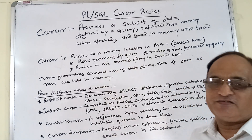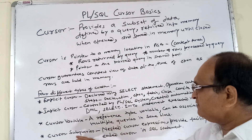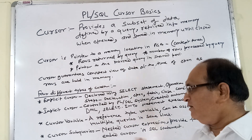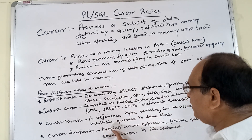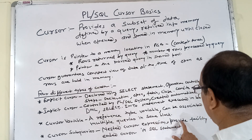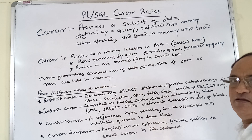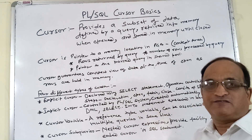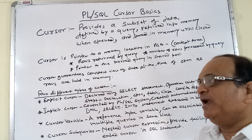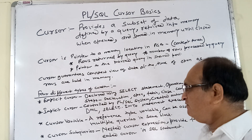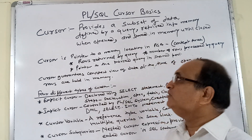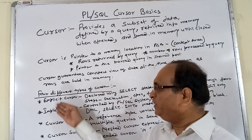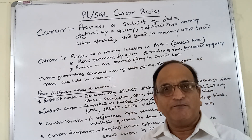The fourth type is the cursor subquery, which is used rarely and only in certain very specific situations. These are nested cursor expressions that provide the facility to embed a cursor in a SQL statement. It is essentially a facility to declare a cursor as a subquery within a main statement. That is all for now about PL/SQL cursor basics — we are going to see practical demonstrations of each of these cursor types in the Oracle environment with examples.